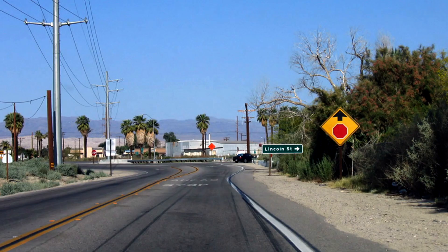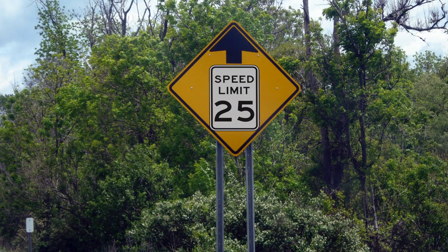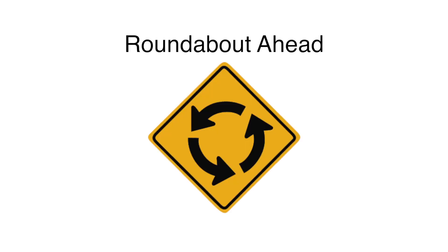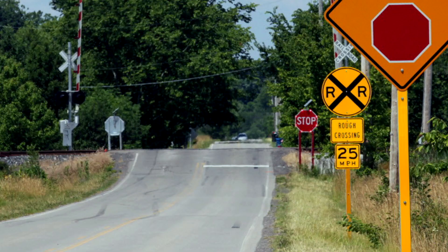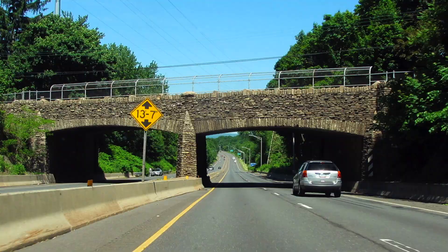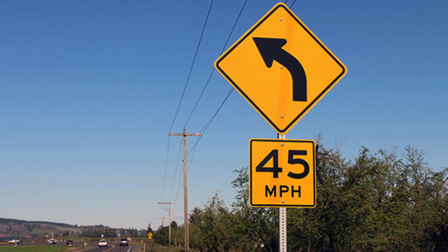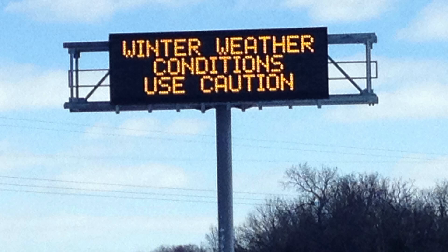Stop ahead: There is a stop sign ahead — slow down and prepare to stop. Signal ahead: A traffic signal is ahead; slow down and be ready to stop. Reduce speed limit ahead: Gradually slow to the indicated speed. Roundabout ahead: There is a roundabout intersection ahead. Railroad advance: A railroad crossing is ahead — you may have to stop. Low clearance: The overpass ahead has low clearance; do not proceed if your vehicle is too tall to pass under it. Hill: A steep grade is ahead. Advisory speed: Advises the safe speed for freeway ramps and curves; this sign may be used with other signs. Signs may be electronic and may change based on current conditions.